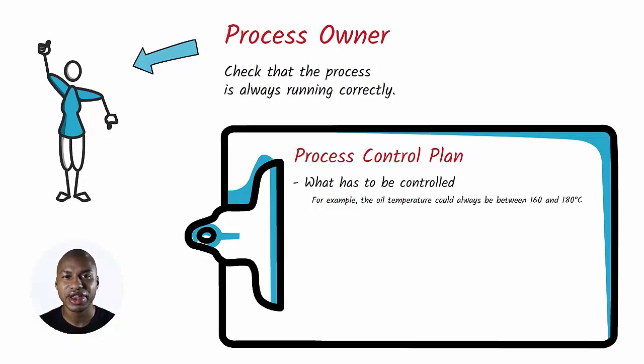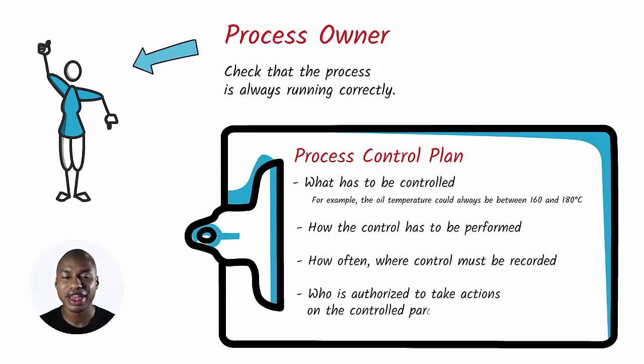In addition, the process control plan also specifies how the control is to be performed, how often, where control must be recorded, and who is authorized to take actions on the controlled parameter.